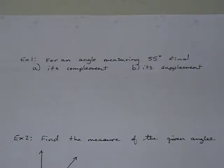Alright, so we've been asked to find the complement and the supplement of an angle measuring 55 degrees. And just so that we're all on the same page, a complement is a pair of angles whose sum is 90 degrees.